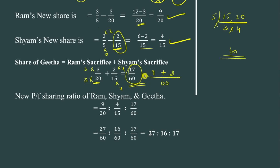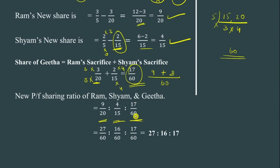The last step is to calculate the New Profit Sharing Ratio. Ram's new share is 9/20, Sham's new share is 4/15, and Gita's share is 17/60. The problem is the denominators are not the same, so we convert to a common denominator of 60.